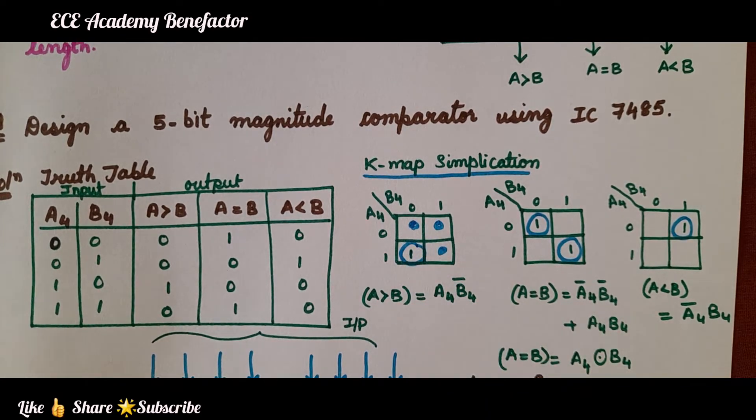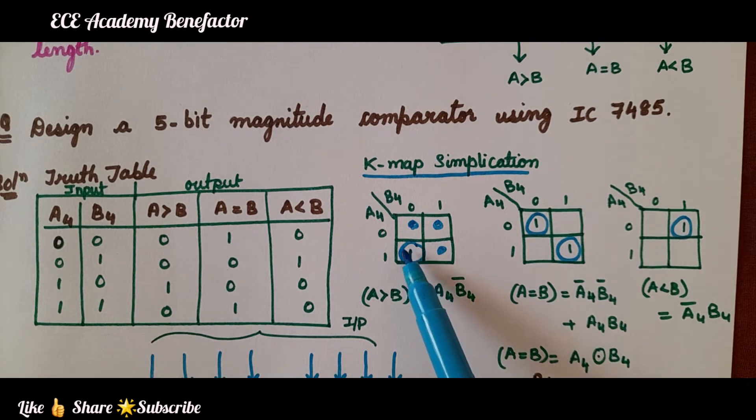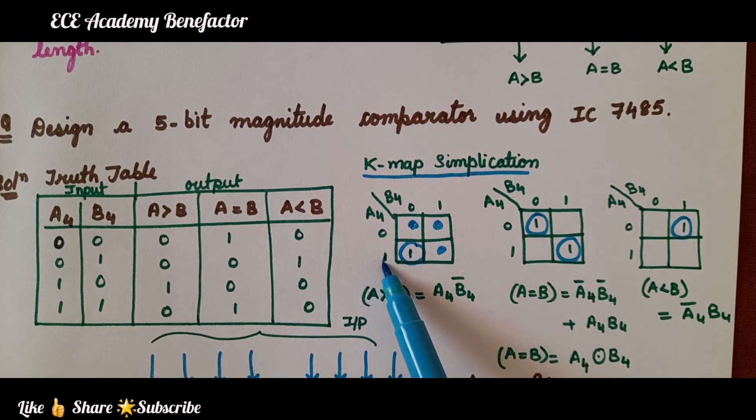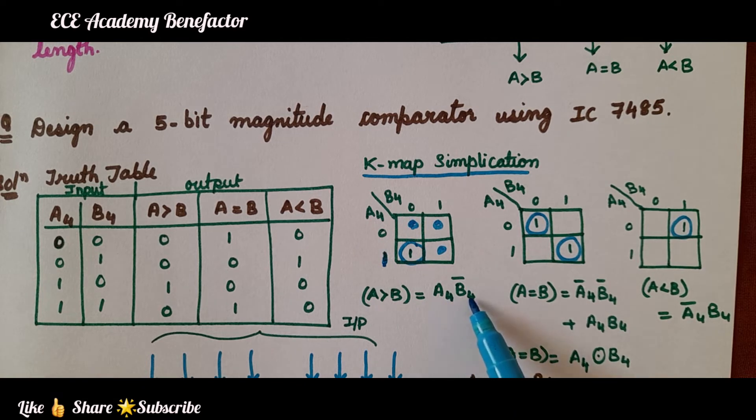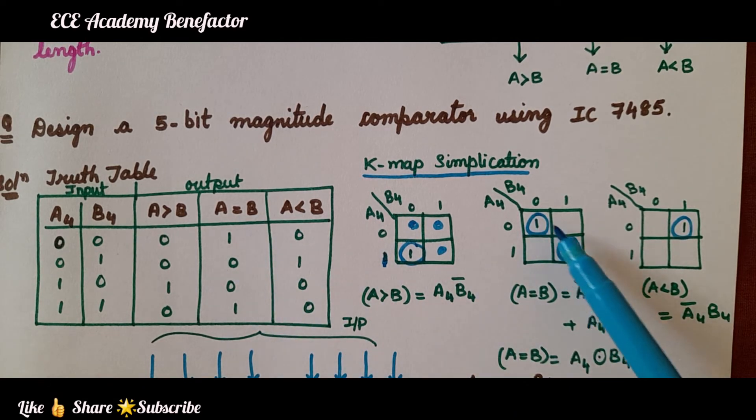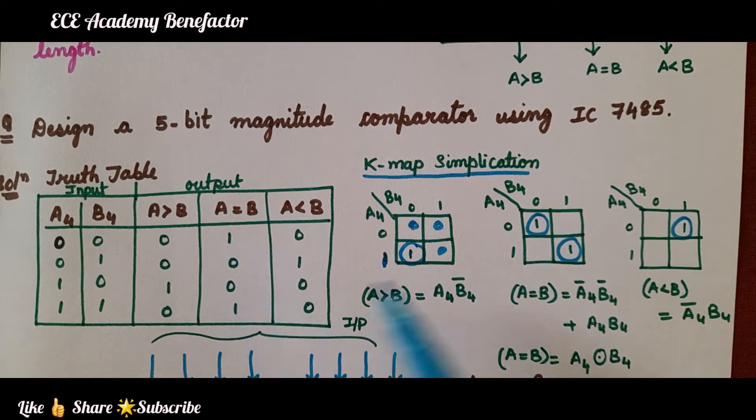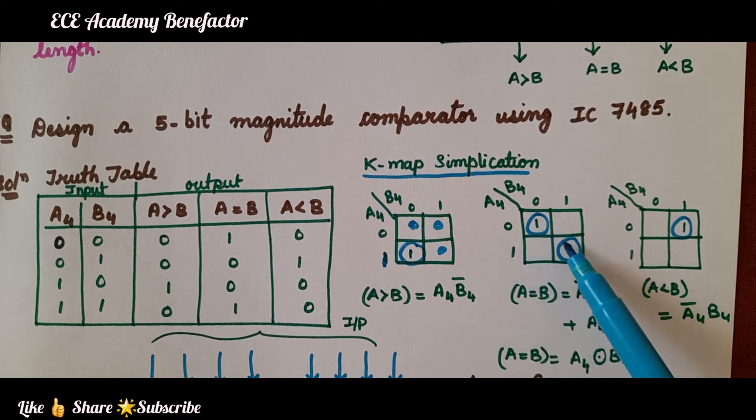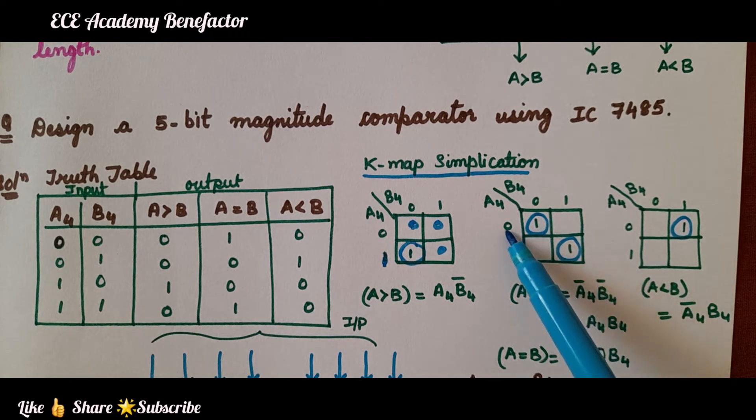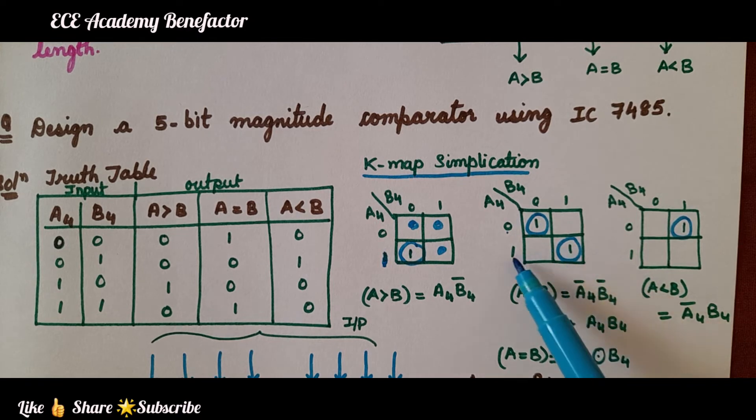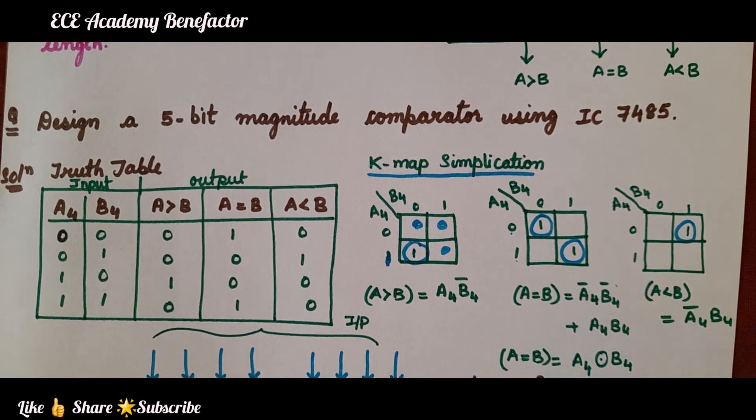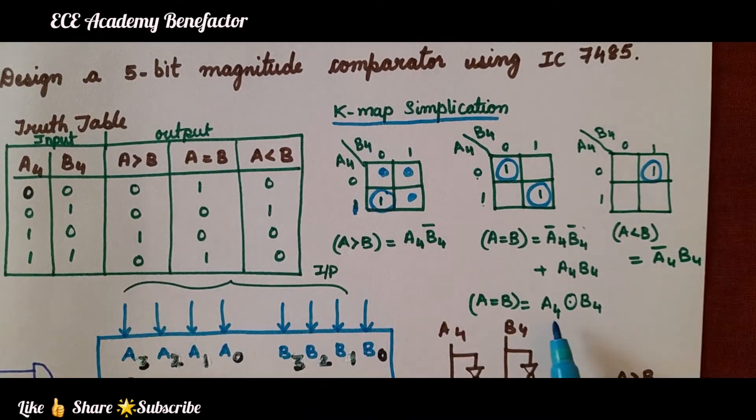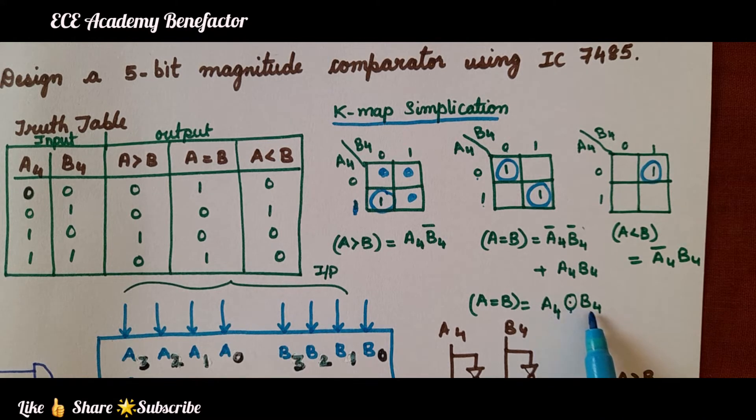The term for coming to this single one is A4, 1, no. So it will be A4 and here 0, B4, 0. So A4, B4 bar. Coming to A equal to B, there are two ones, but pairing is not possible. So individually we have circled them. For this term it is A4 bar B4 bar plus A4 B4. What is this expression looking like? It is an XNOR expression, A4 XNOR B4.